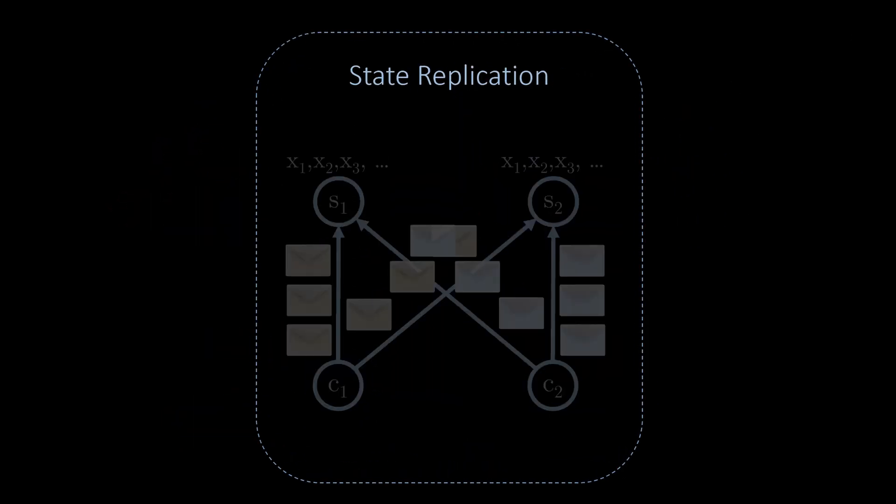Let's summarize what we've learnt. We considered the problem of state replication. As explained in the previous video, the goal of state replication is to maintain a consistent state across multiple servers when dealing with multiple clients that interact with these servers independently and concurrently.